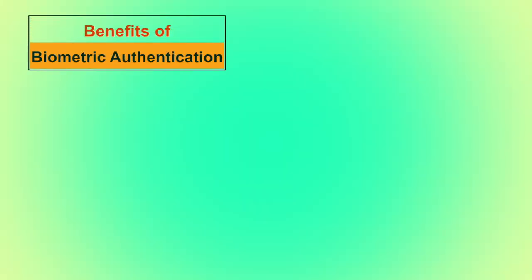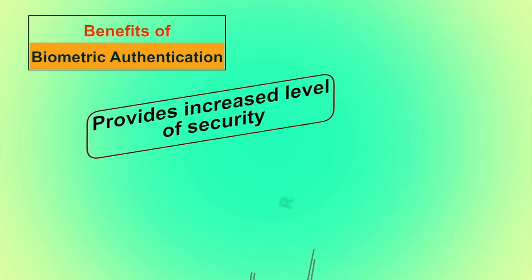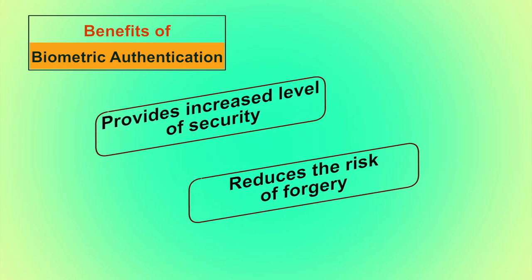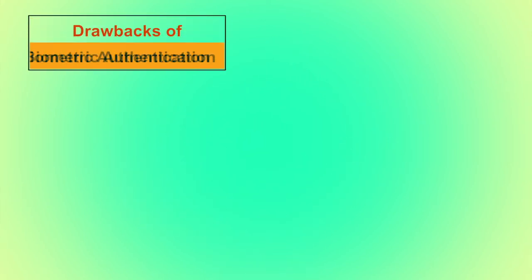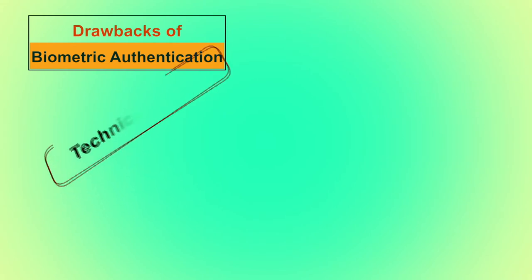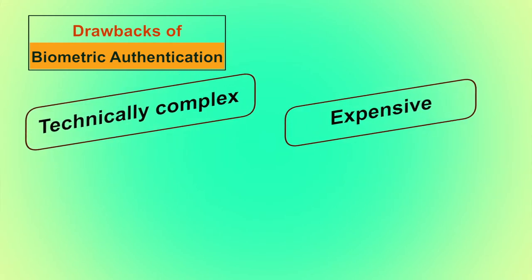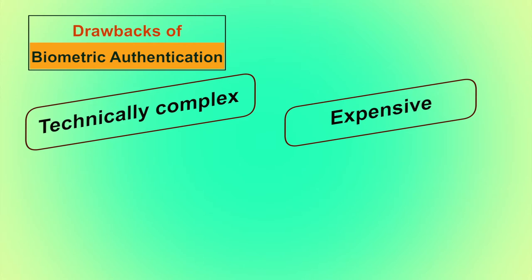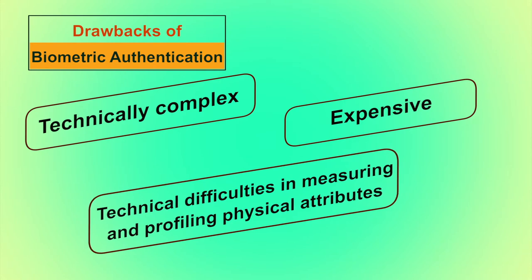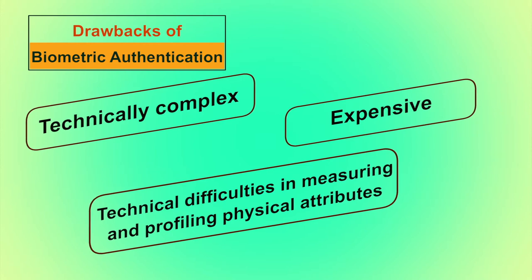Benefits of biometric authentication: they are highly secure; we cannot forge the physical characteristics of any individual, so the chance of forgery is reduced. Drawbacks: they are complex to manage and require costly, expensive tools to process data. Different challenges occur — for example, if a frontal face is stored in the database but the presented face is non-frontal, the system cannot detect it. Or if your fingerprint is slightly damaged due to cuts and marks, your phone might not be able to identify you.